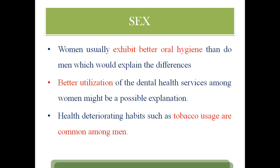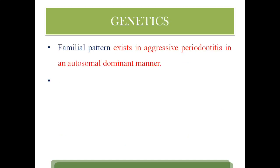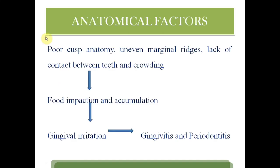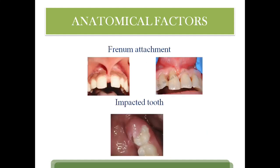Genetics: aggressive periodontitis can be explained by genetics — it is an autosomal dominant disorder. Anatomical factors like poor cusp anatomy, marginal ridges, lack of contact between teeth, and crowding can lead to food impaction and accumulation, thereby causing gingival irritation, which ultimately leads to gingivitis and periodontitis.